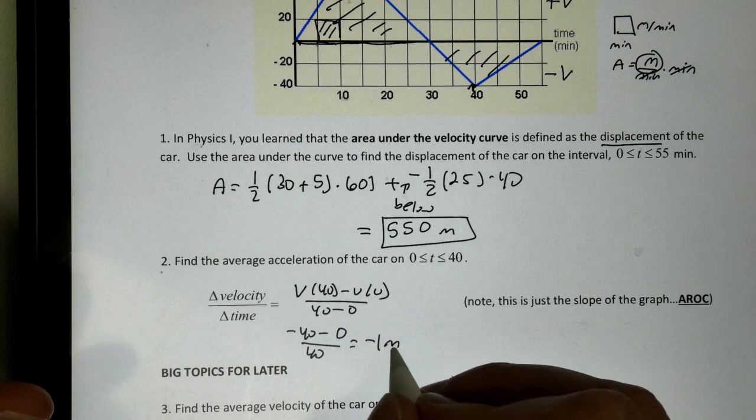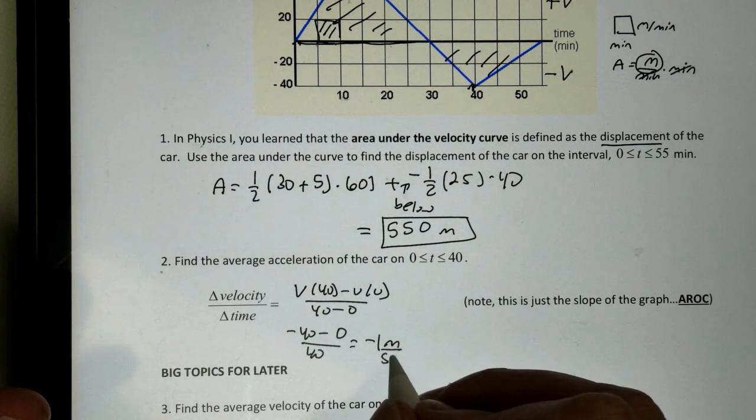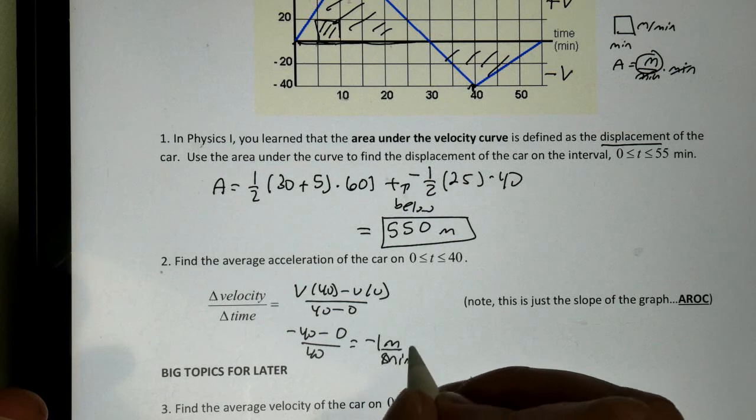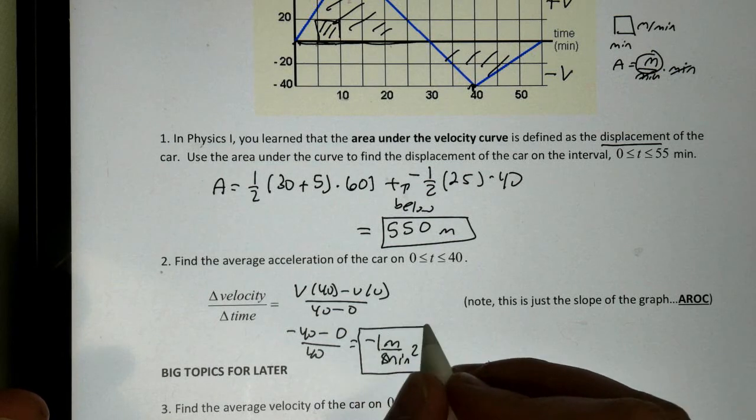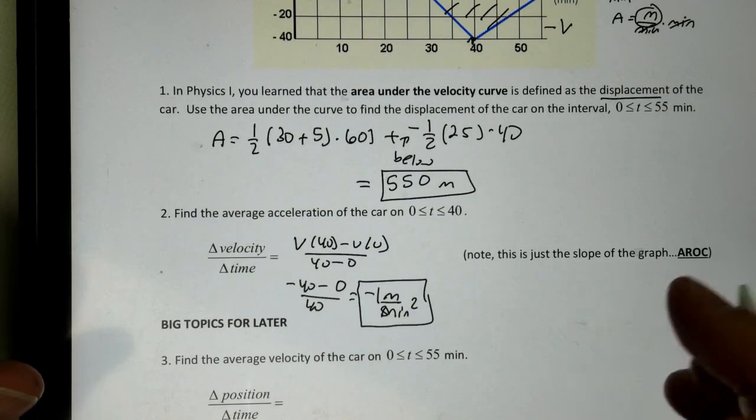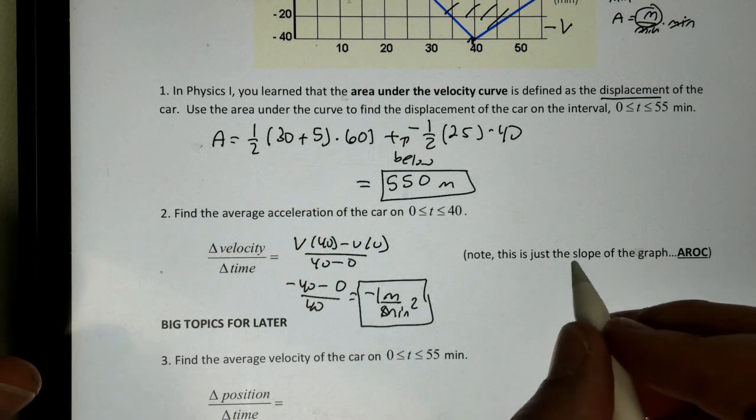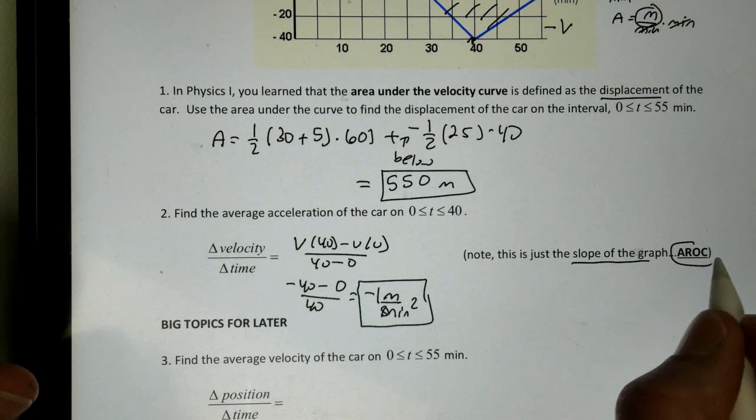And it's acceleration, meters per minute squared. Negative 1 meter per minute squared. Notice, this is just the slope of the graph, or our average rate of change.